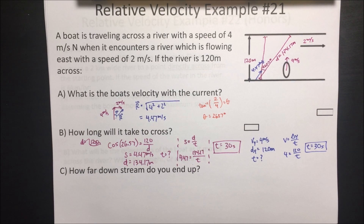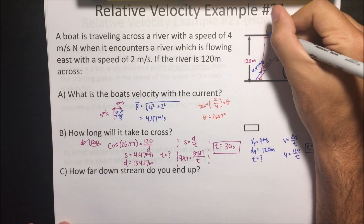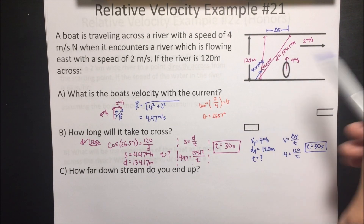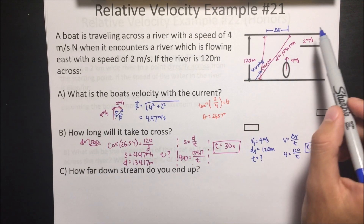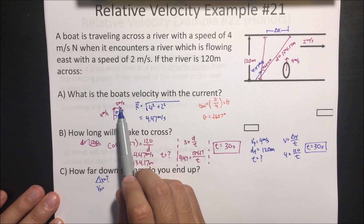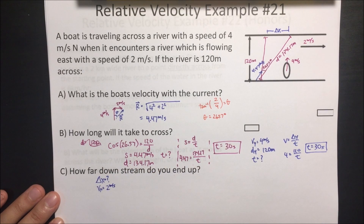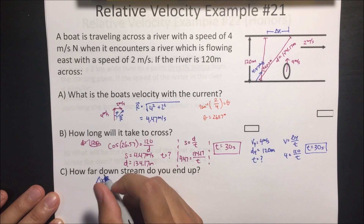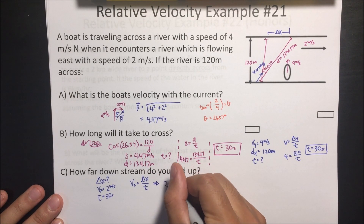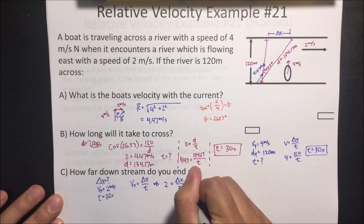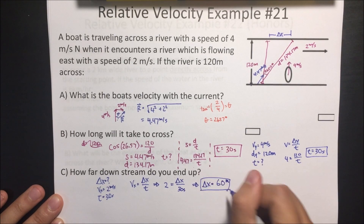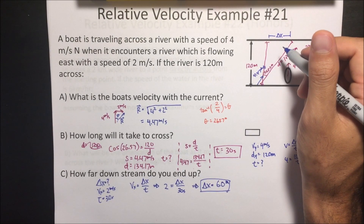The next question is: how far downstream do you end up? Looking at the X direction, the boat is moving in the X direction with the current at 2 meters per second and it's in the water for 30 seconds. Using velocity equals displacement divided by time: 2 equals displacement divided by 30, so displacement equals 60 meters downstream.